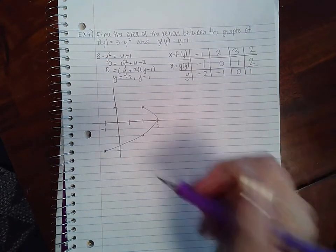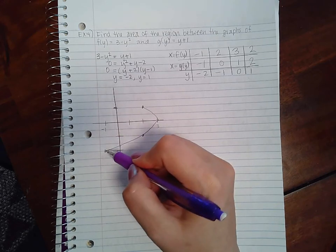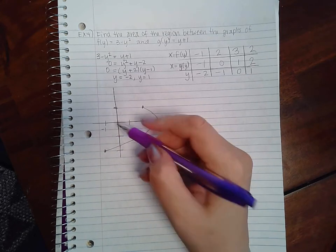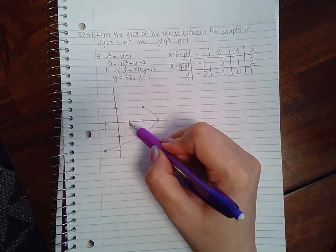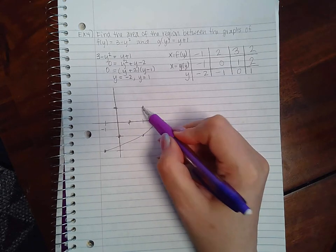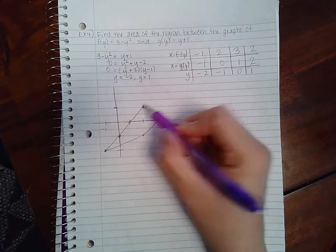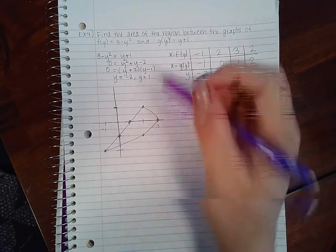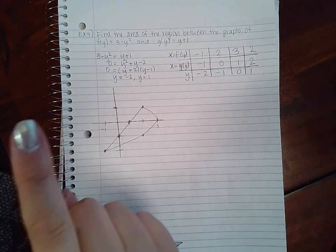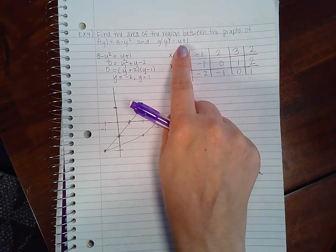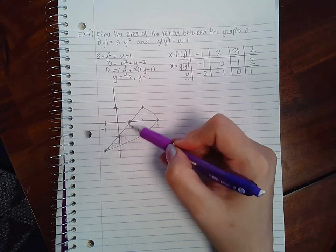Now the second function: at -2 the x value is -1, then 0 and -1, 1 and 0, and then 2 and 1. So again tracing them from left to right I have this here. This makes sense - this should be a parabola but a sideways parabola because it's in terms of y, and this should still be a line. This is the region we should be looking at.